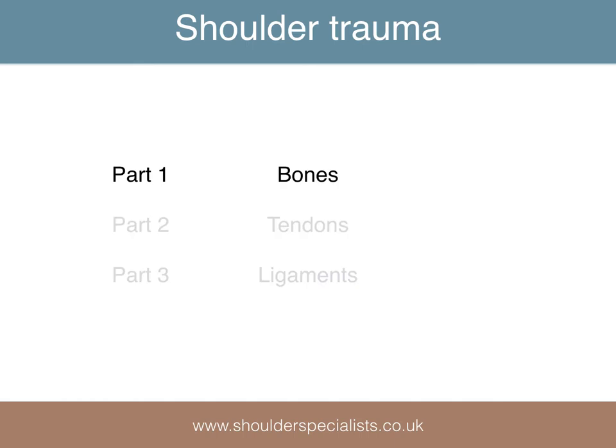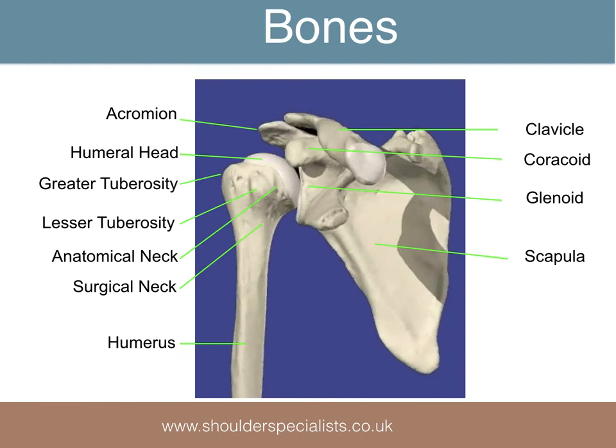I'd briefly like to recap the relevant bony anatomy of the shoulder girdle. The shoulder joint is formed by the ball or head of the humerus and the socket or glenoid, which is part of the shoulder blade or scapula. Other important parts of the scapula include the anterior protuberance called the coracoid, and the flat acromion which articulates with the collarbone or clavicle at the acromioclavicular joint.